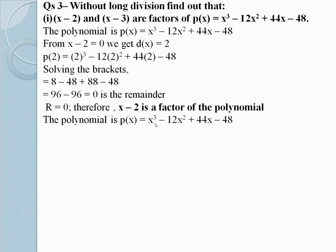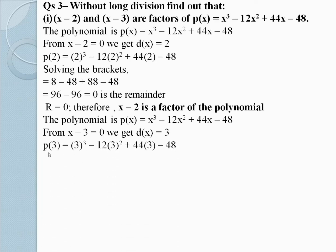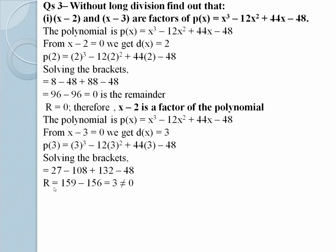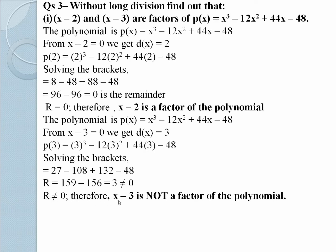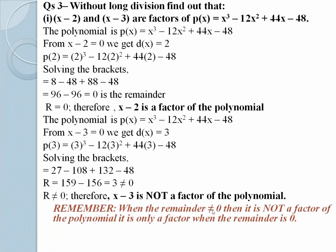The polynomial is P(x) = x³ - 12x² + 44x - 48. From x - 3 = 0, we get x = 3. P(3) = 3³ - 12(3)² + 44(3) - 48. Solving: 27 - 108 + 132 - 48 = 3, which is not equal to 0. Since r ≠ 0, therefore x - 3 is not a factor of the polynomial. Remember: it is only a factor when the remainder is 0.